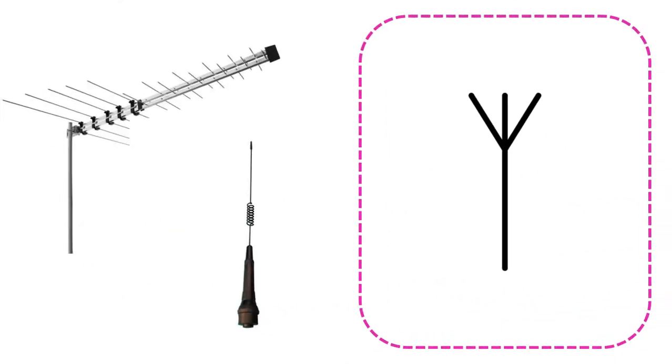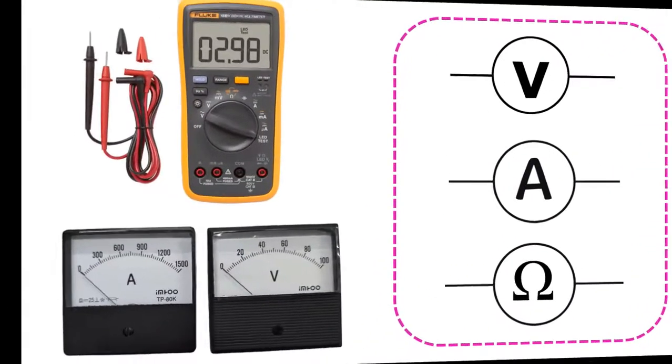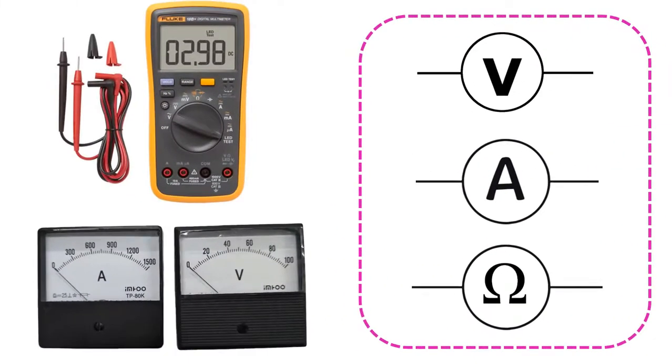Antennas used to receive or transmit radio signals are shown in circuits with the symbol here. For voltmeters, ammeters, and ohmmeters used in voltage, current, and resistance measurement, they are indicated by symbols with their initials in circles. Voltmeter is connected in parallel, while ammeter is connected in series.